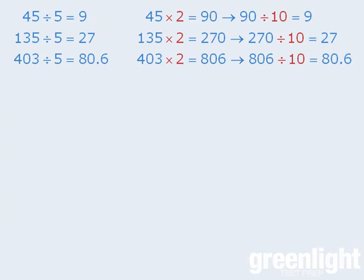In other words, if we take a number and multiply it by 2 and then divide the results by 10, the end result is the same as taking the original number and dividing it by 5. This is very useful, since it's relatively easy to double numbers in our head, and it's even easier to divide numbers by 10 in our head.